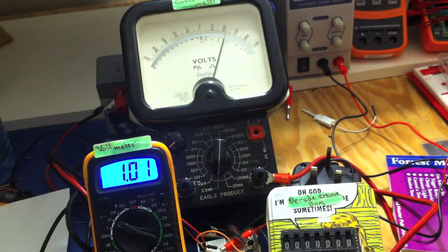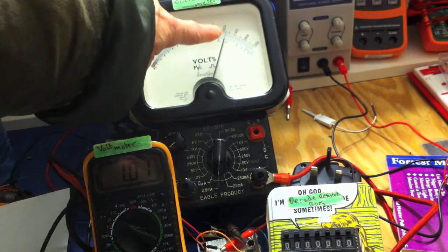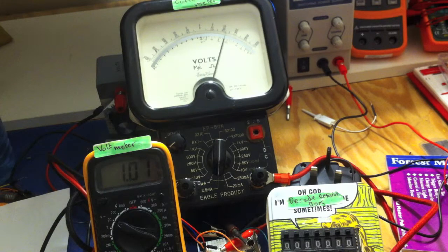We're seeing 1.01 volts on the voltmeter, and although it might not be that clear on the video, that current meter there is showing 1.2 milliamps. So that's the values we have for zero ohms resistance at the collector voltage.